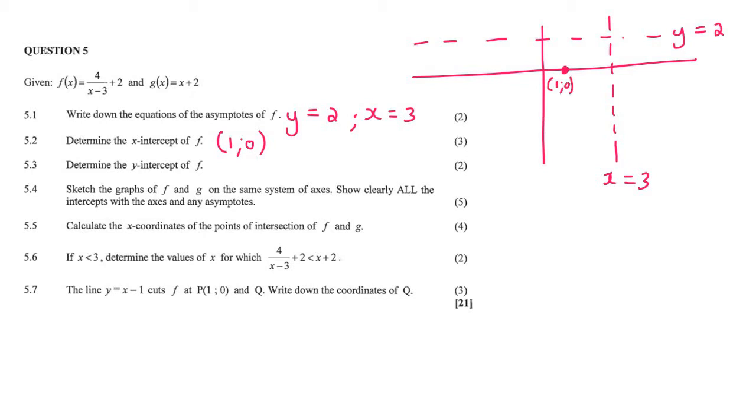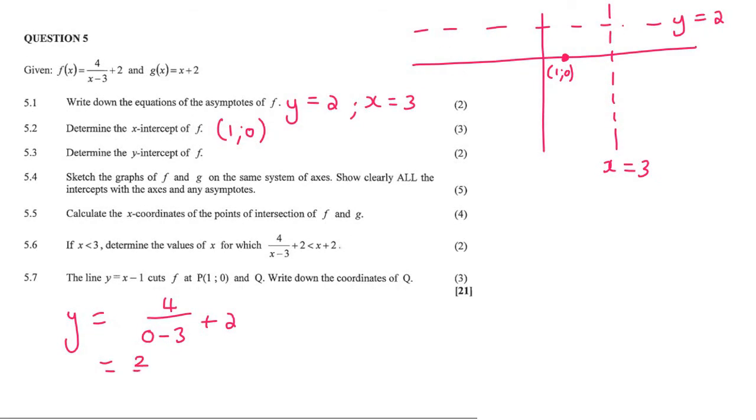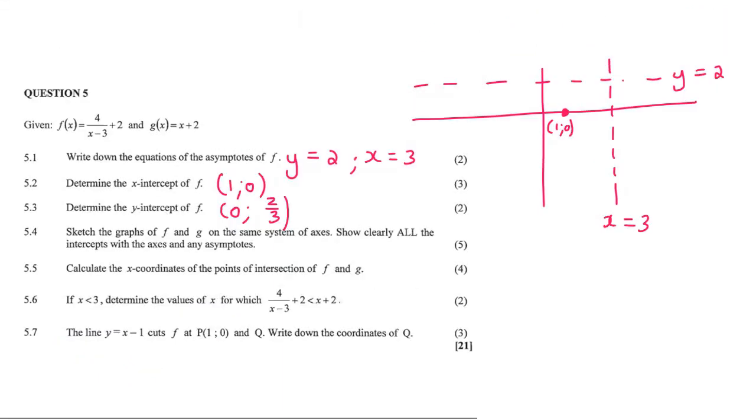Determine the y-intercept of f. To find the y-intercept you make x equal to 0. So we'll make x equal to 0. Let's just say y equals 4 over 0 minus 3 plus 2. I would then type that on the calculator and that's going to give us 2 thirds. So the y-intercept will be x is 0 and y is 2 thirds. And so 2 thirds would be somewhere over here. And so that's going to be the coordinates 0 and 2 thirds.